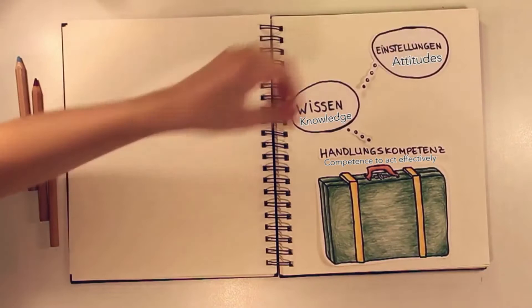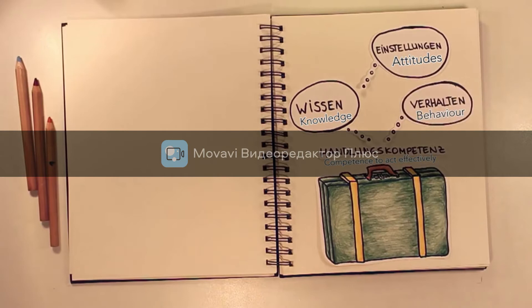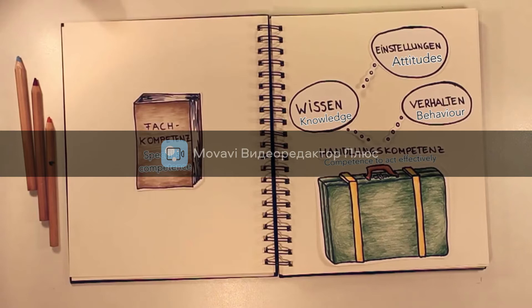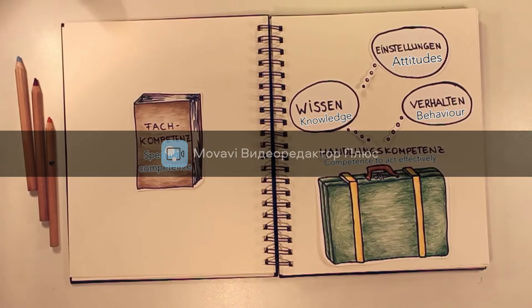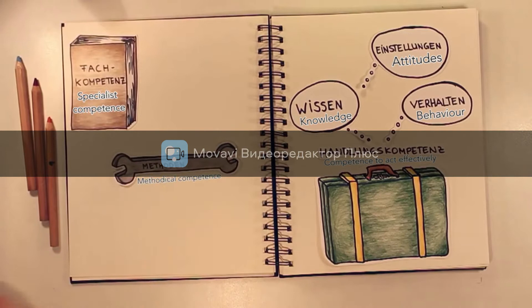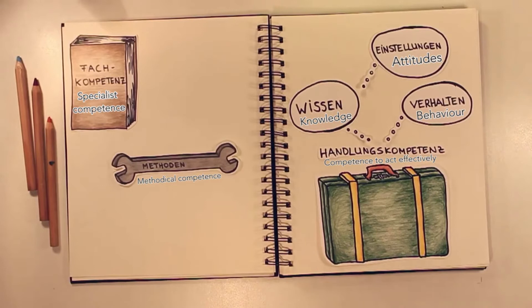A pillar of these competencies is specialist competence. On the level of knowledge, we need to possess specialist knowledge, but it is equally important that we are capable of applying it and acting in an appropriate and motivated manner. A further aspect of acting effectively is methodical competence. While interacting, it is important to know methods that serve as appropriate tools in each situation, and we must be capable of putting them into practice.